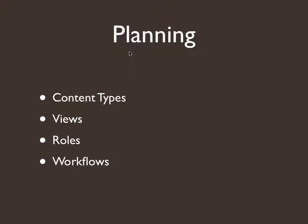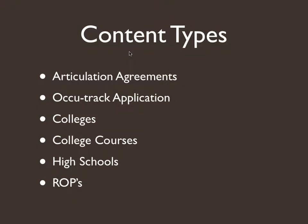Here's how I approached the planning. First I looked at the content types — the application itself, plus colleges. Then I looked at views: what am I going to display to which users? Then I looked at what kinds of users I'd have — a teacher, a vice chancellor of education, a vice president — all these different roles, and then different workflows for each. The basic content types are: articulation agreements, the OccuTrack application, colleges, college courses, high schools, and ROPs — Regional Occupational Programs.